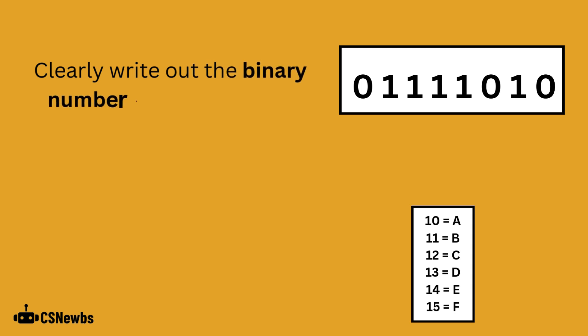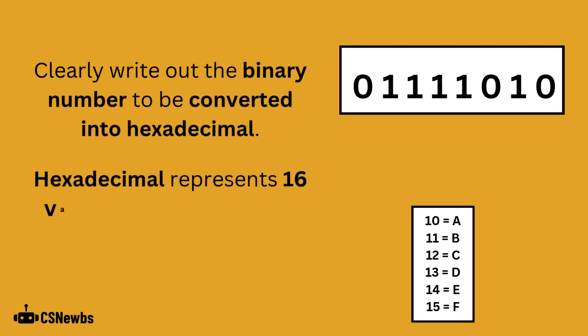Clearly write out the binary number to be converted into hexadecimal. Hexadecimal represents 16 values, 0 to 9 and then A to F.